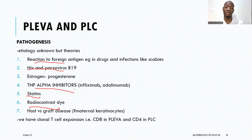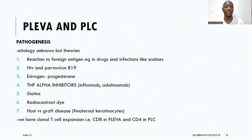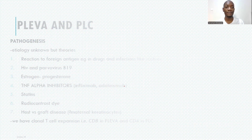Whatever the trigger is — which we don't know — the end result is a clonal T-cell expansion, especially CD8 predominating in PLEVA and CD4 predominating in PLC. To summarize the pathogenesis: the exact trigger is unknown, but both conditions arise from abnormal reactions to foreign antigens, infections such as HIV, scabies, and parvovirus B19, and drugs like TNF-alpha inhibitors.